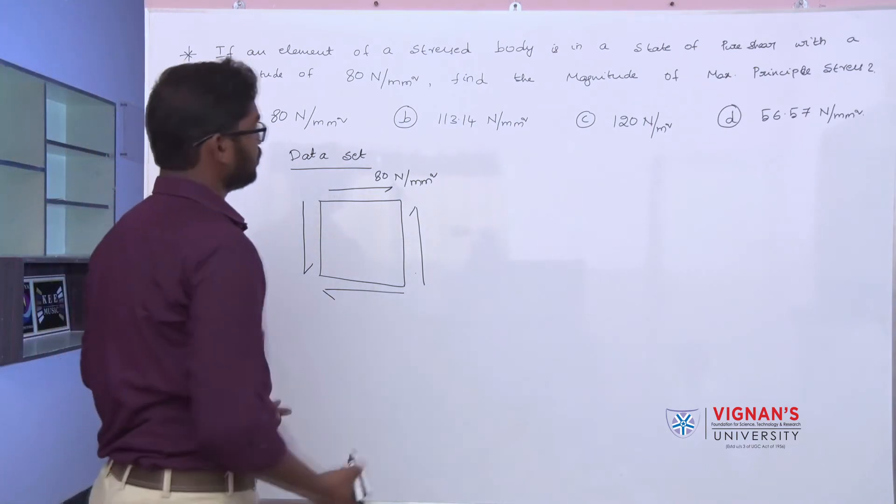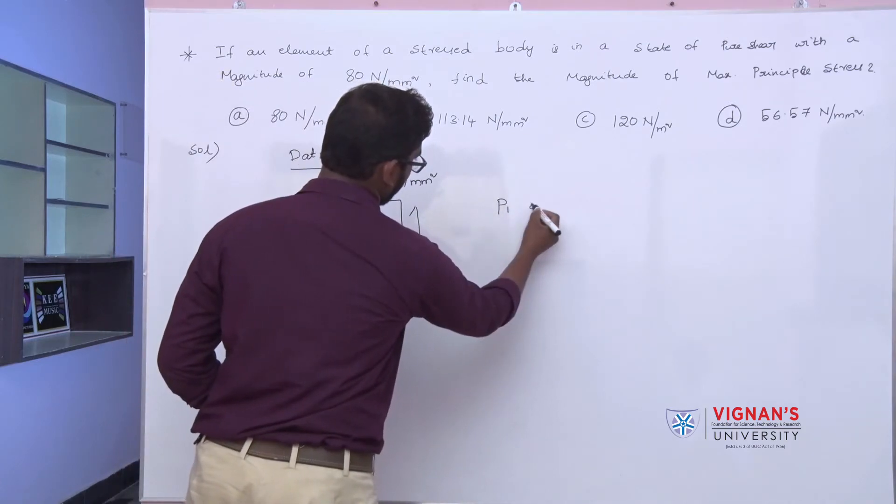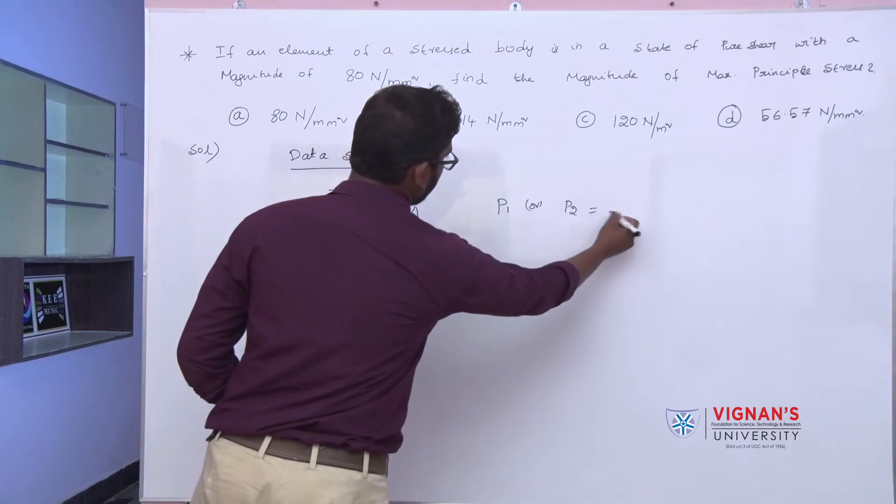For the pure shear condition, the maximum shear stress or minimum shear stress is equal to plus or minus the shear stress itself.